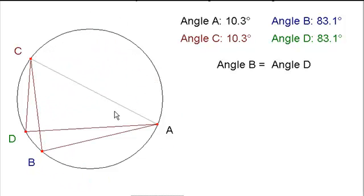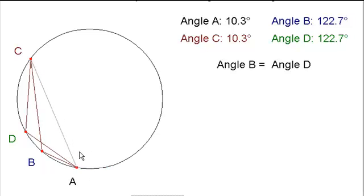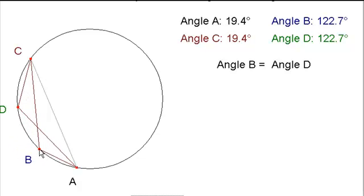Now what happens if we make AC divide the circle into two different segments, and we draw the two points in the minor segment, the smaller segment? Well, they end up being rather larger angles, but they're still equal to each other because they're drawn in the same segment.